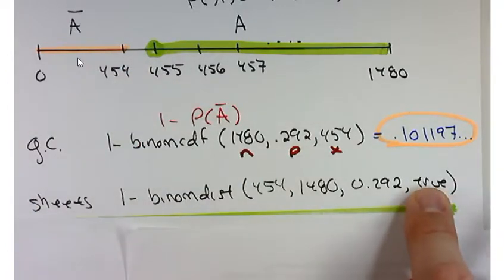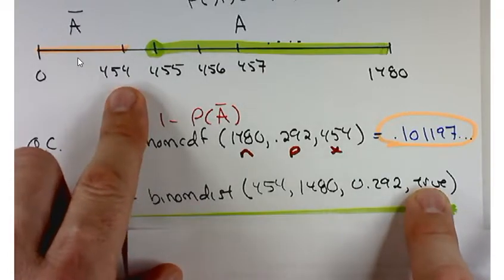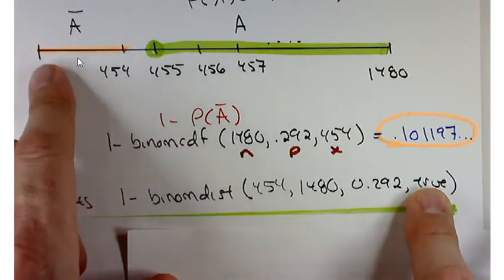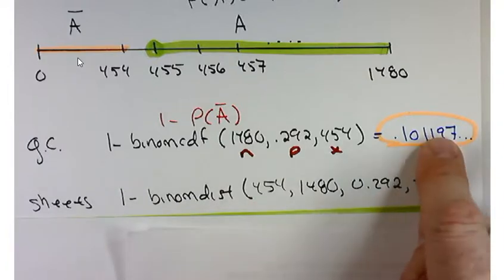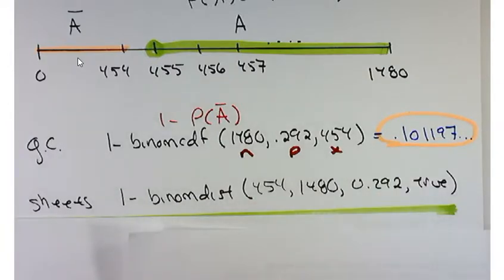If I had false here, it would just give me the probability that x equals 454 and nothing else. So with the true there, you add that command in Google Sheets and you should get exactly the same thing we got from my graphing calculator. And that's nice. You get the exact answer, no messing around, you're done.